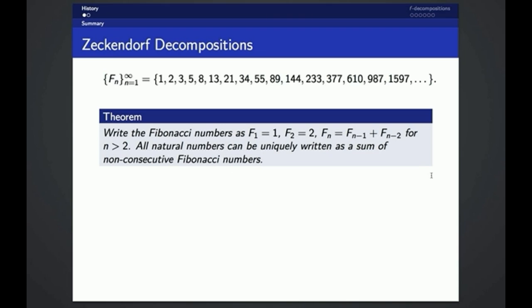then Zeckendorf's theorem states that all natural numbers can uniquely be written as the sum of non-consecutive Fibonacci numbers. We can write 2014, as an example, as 1597 plus 377 plus 34 plus 5 plus 1, which is the sum of non-consecutive Fibonacci numbers.